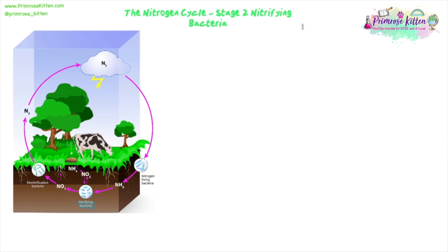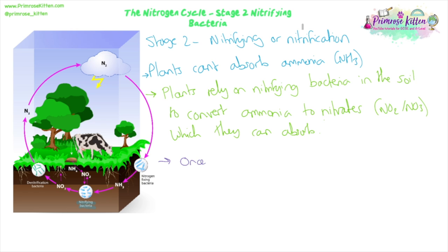Stage two is nitrification. Plants can't absorb ammonia directly — they can't use it straight from the soil. They need it converted into nitrates, which they can absorb. Nitrifying bacteria in the soil do this — they take the ammonia and convert it to nitrates, either NO2 or NO3. Once the plants absorb these nitrates, they use them to make proteins, and those amino acids and proteins are then passed onto animals in the food chain.